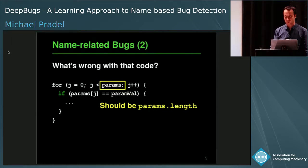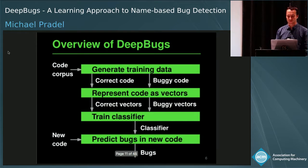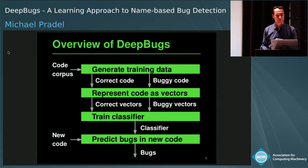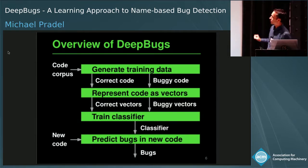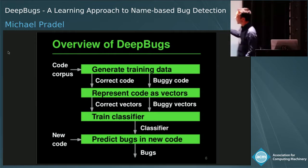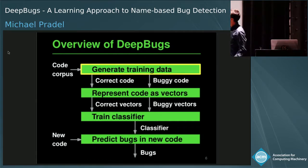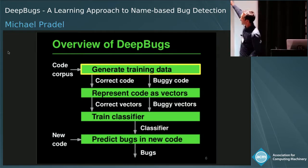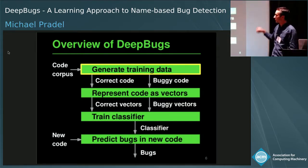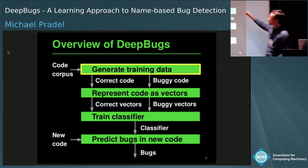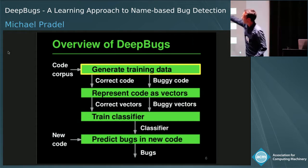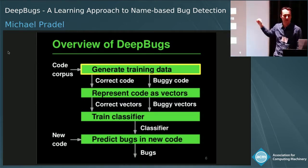This is the kind of bug we would like to find. We're introducing this approach called DeepBugs, which uses neural networks and deep learning to find these name-related bugs. The input is a corpus of code, and the first step is to automatically create training data from this corpus — we get a set of examples of correct code and buggy code.